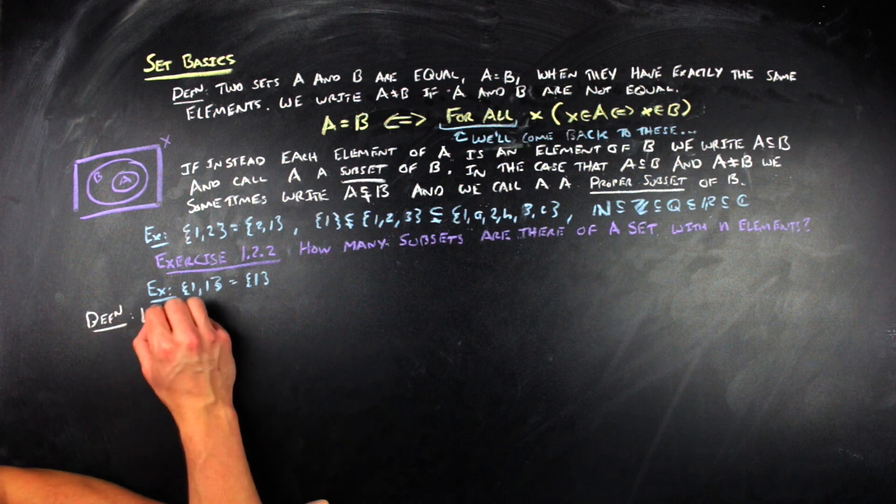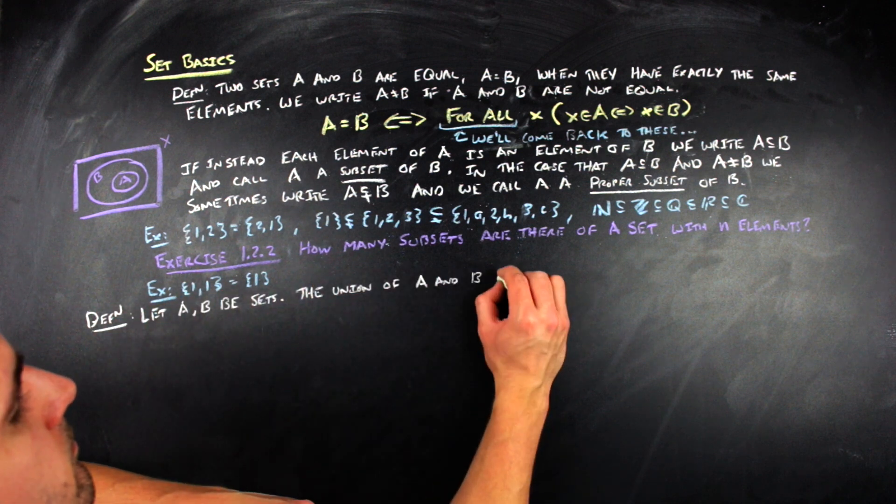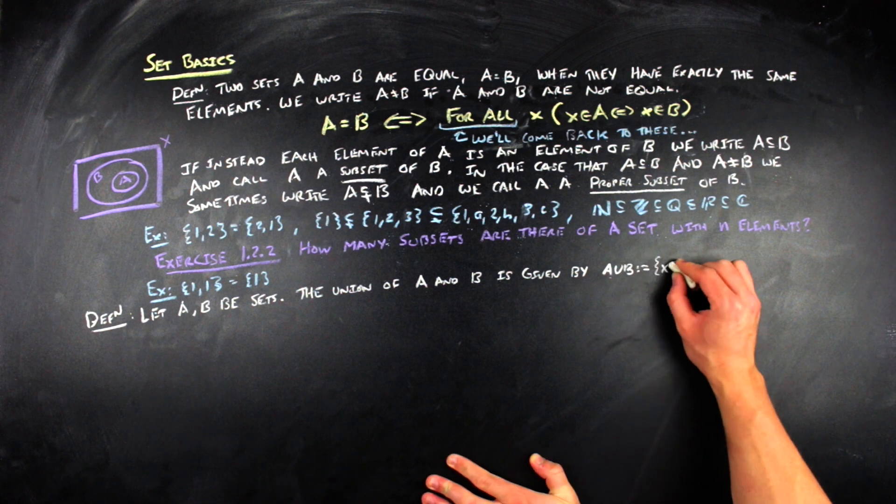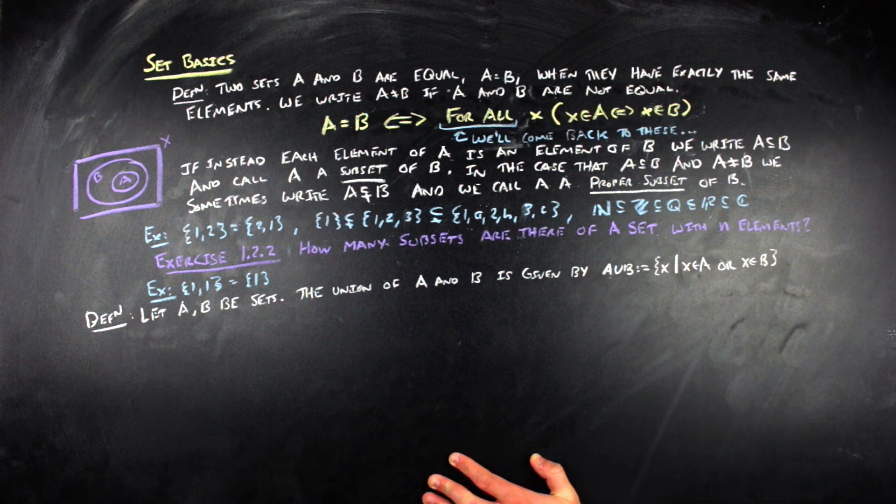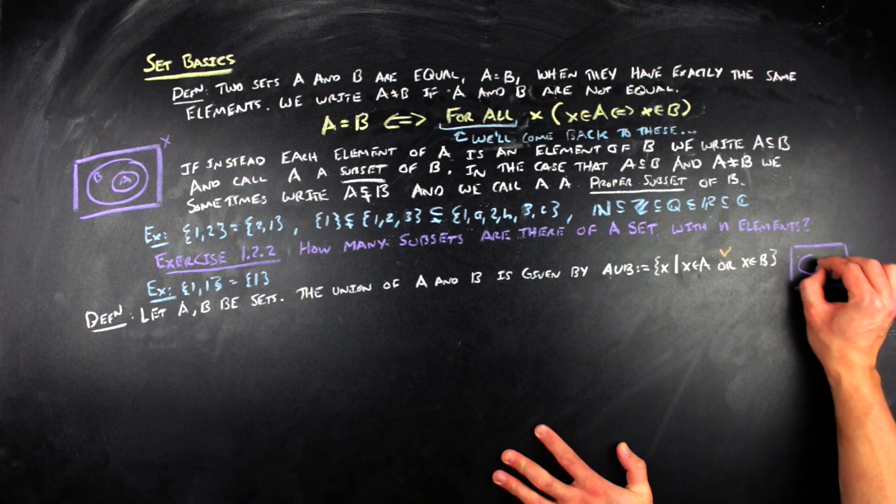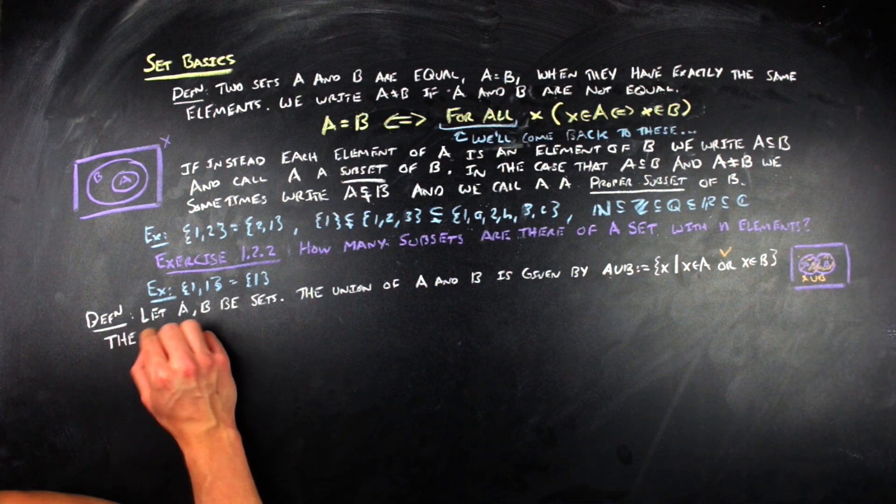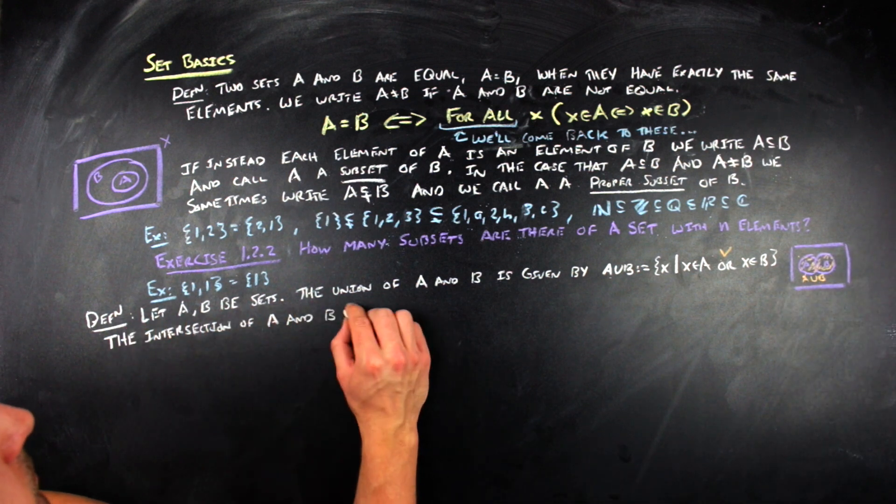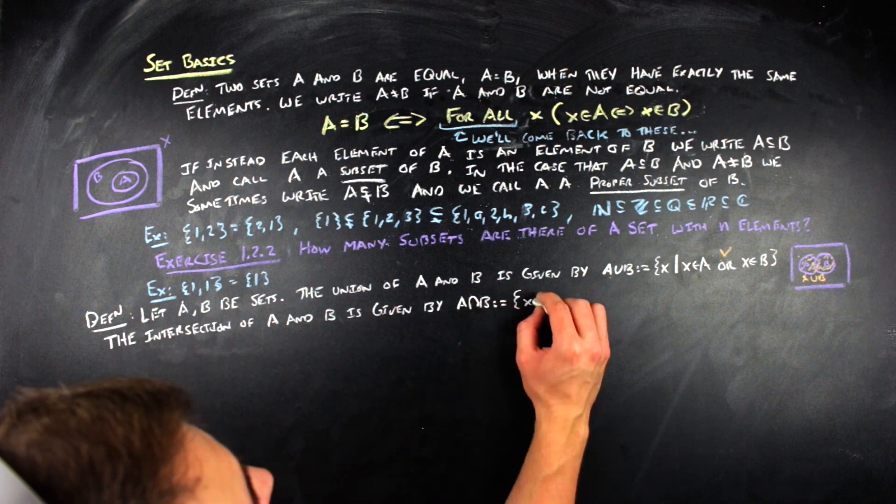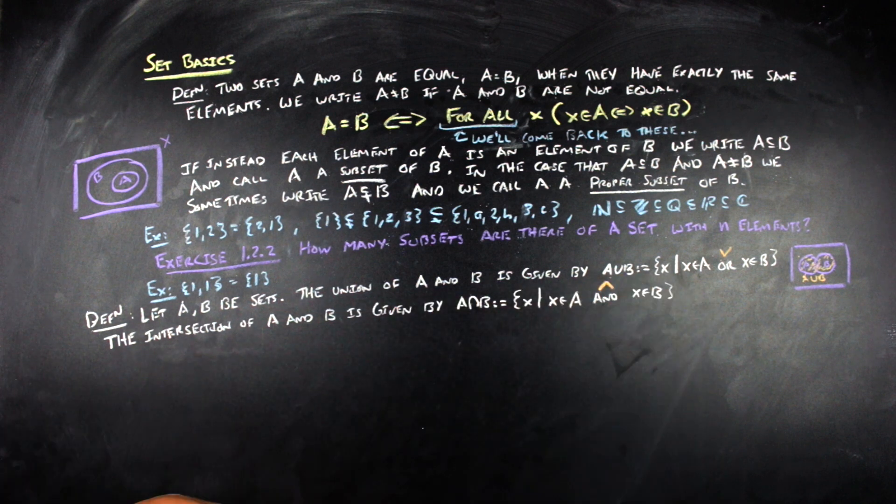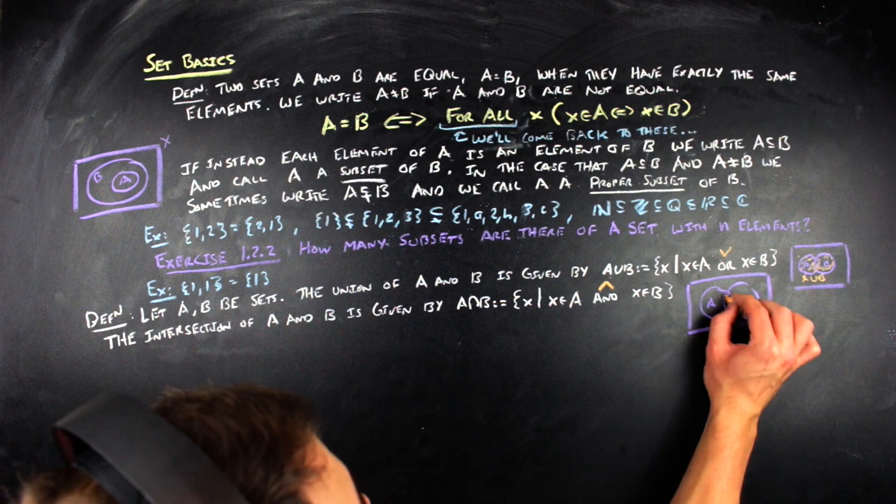Let's get to some set operations. So, given two sets A and B, the union of A and B, written A cup B, is given by all of the x's such that x is within A or x is within B. The intersection of A and B is written A cap B. A intersect B is by definition equal to all of the x's such that x is within A and x is within B.